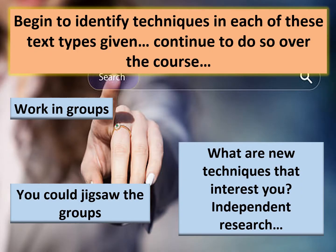Your task now is this: you have a list of three pages of language, form, and structure techniques within drama, prose, and poetry. You also have three extracts — one from An Inspector Calls, one from The Great Gatsby, and one from the wonderful poet Seamus Heaney. You now want to begin to identify some techniques distinctive to each of these genre types. How you do this is up to your teacher and yourselves.